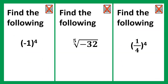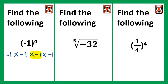Lastly, we're onto the advanced questions, which are some of the trickiest types of questions you can find on this topic. Find the following. Firstly, we have negative 1 to the power of 4 — that's the same as negative 1 times negative 1 times negative 1 times negative 1. Negative 1 times negative 1 is 1; multiplying by negative 1 switches the sign back to negative 1, and then multiplying by negative 1 again switches the sign back to positive 1.